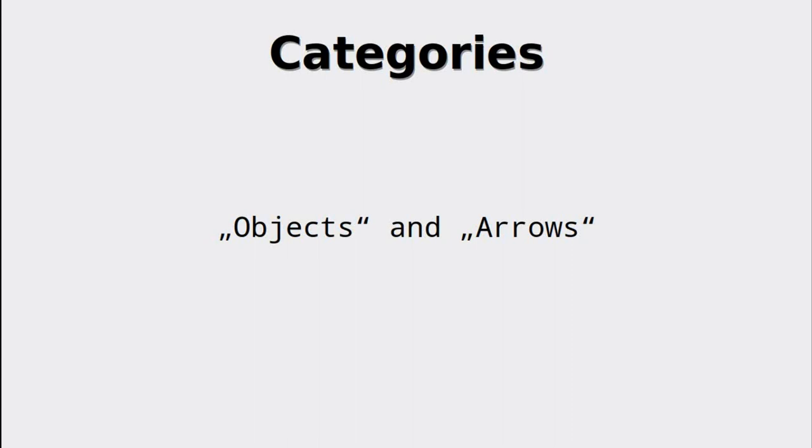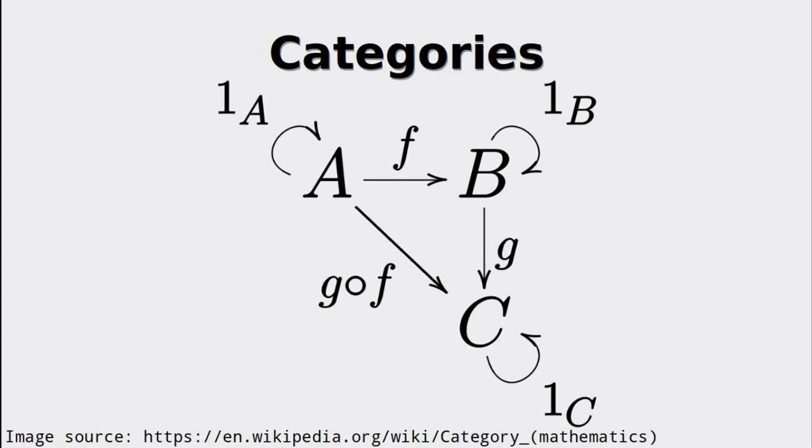A, B and C are objects while F and G are arrows. Additionally, we have some special arrows.